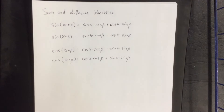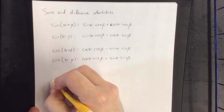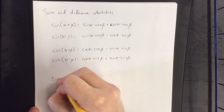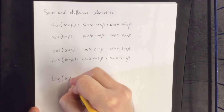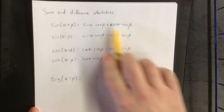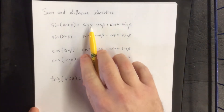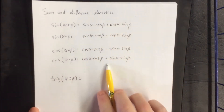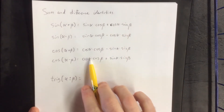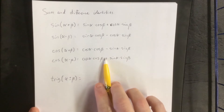So these are the four that I want to focus on. All four of these formulas take on the form of a trig function of alpha plus or minus beta. Over on the right-hand side for all four of these, the angles are always going to be alpha, beta, alpha, beta — we're going to maintain the same order.